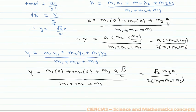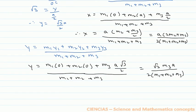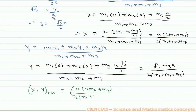So these are the x and y coordinates. The coordinates of the center of mass are: x = a(2m2 + m3) / [2(m1 + m2 + m3)] and y = (√3·m3·a) / [2(m1 + m2 + m3)].